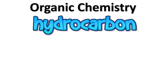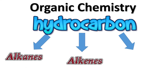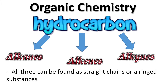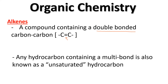In organic chemistry hydrocarbons, last time we looked at alkanes with single bonds. This time we're going to be looking at alkenes with double bonds and then alkynes with triple bonds. Remember that these can come as straight chains or as ringed compounds. Alkenes are compounds that contain a double bond — any hydrocarbon containing a multi-bond is also known as an unsaturated hydrocarbon.